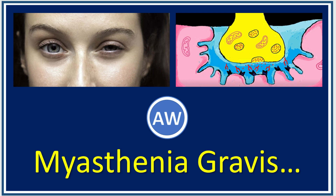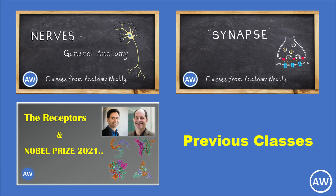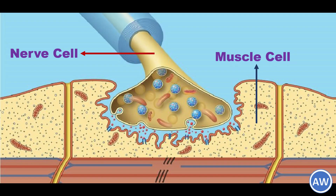Hello everyone, welcome back to Anatomy Weekly. I hope you have been following our series on the nervous system. Continuing with that, today we are going to discuss the topic of neuromuscular junctions and a condition known as myasthenia gravis.